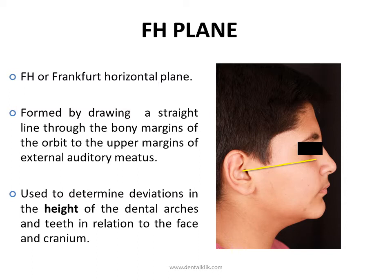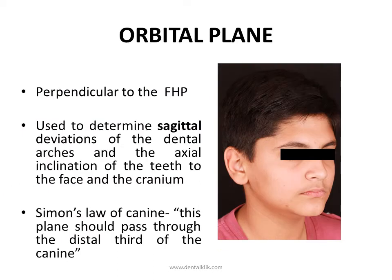The line runs to the upper margin of the external auditory meatus — that is, the notch above the tragus of the ear. This plane is used to determine deviations in the height of the dental arches and teeth in relation to the face and cranium.